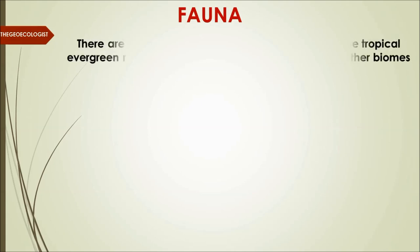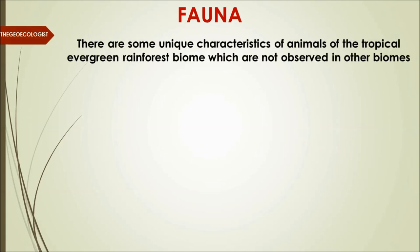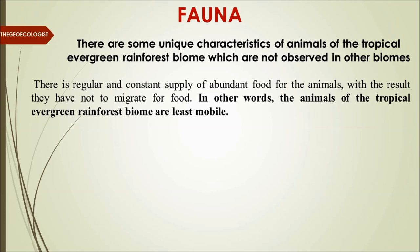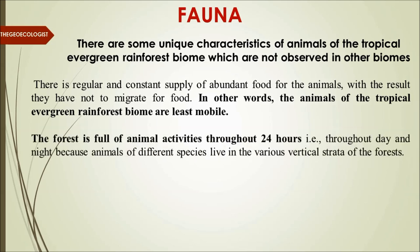The animal kingdom in tropical evergreen rainforest has unique characteristics. There is a regular and constant supply of abundant food from primary producers, making it rich in food for primary consumers. As a result, animals do not need to migrate — migration is least in this biome due to the abundance of food. The forest is full of animal activity throughout the year, 24/7, making animal activities dominant in this biome.